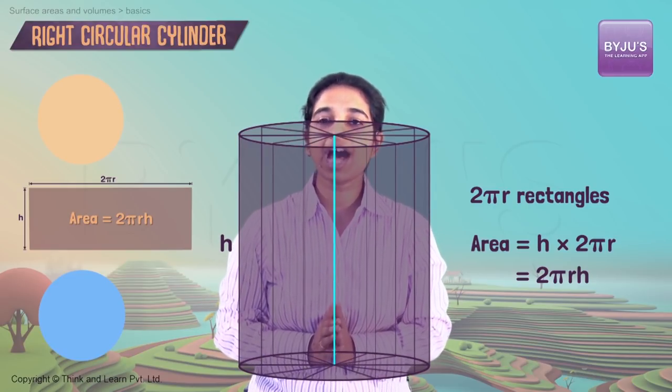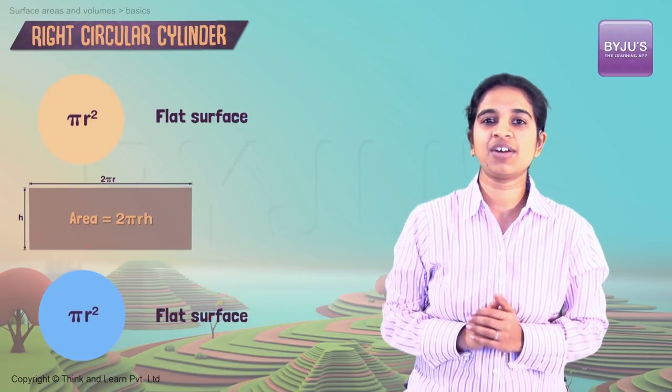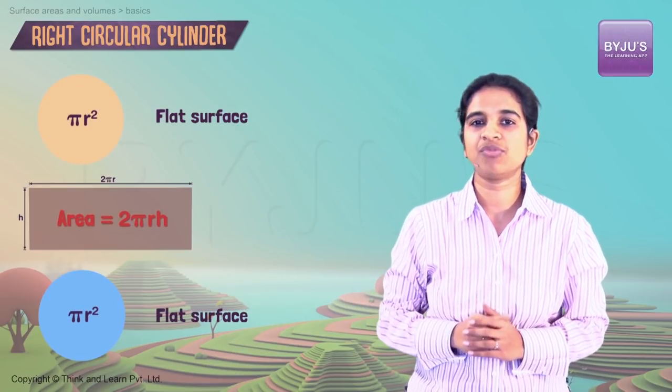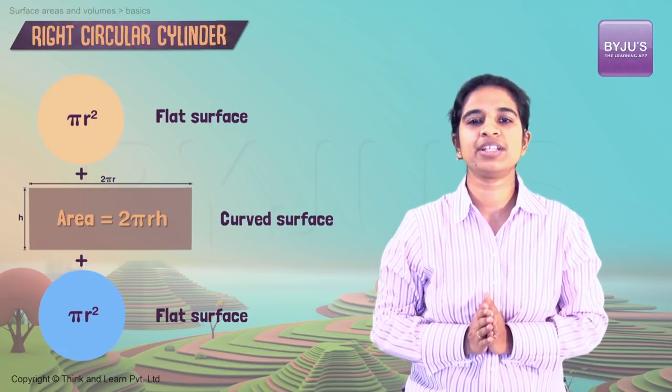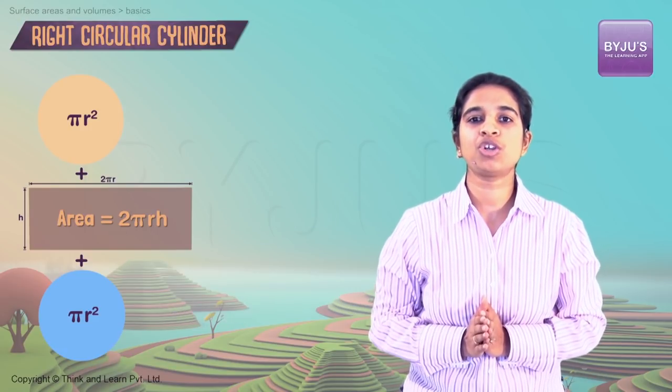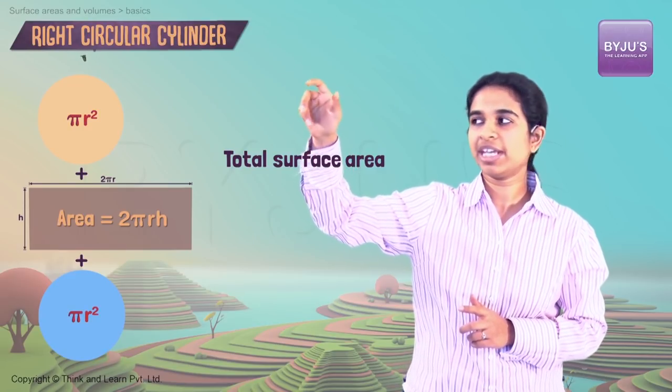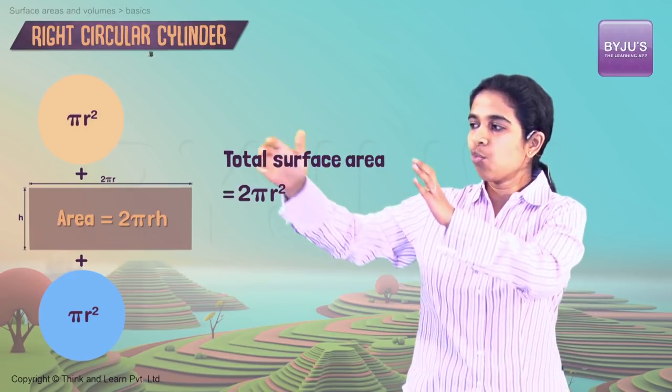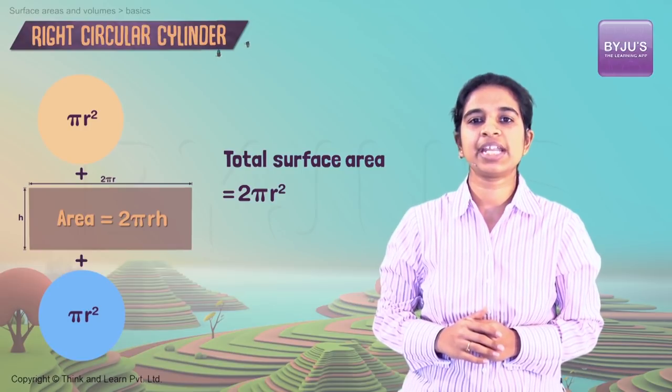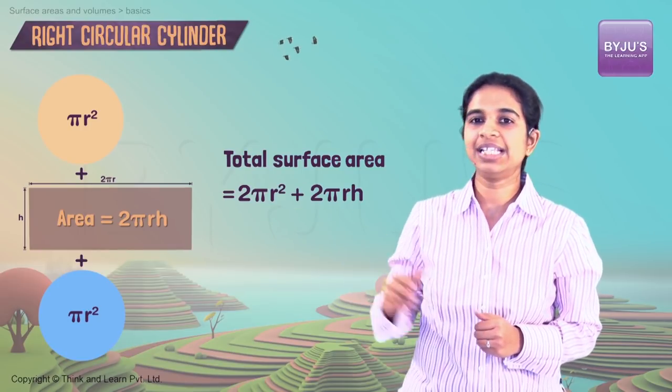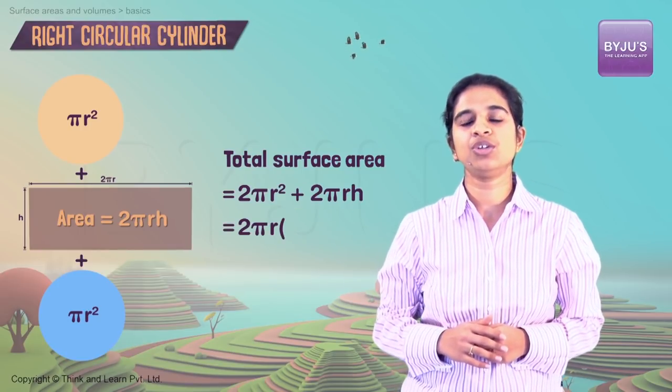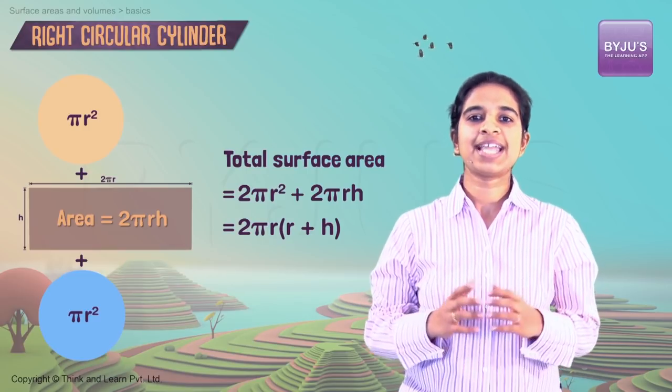So now we know the area of the flat surfaces, we also know the area of the curved surface. You add the two and you'll get the total surface area. So what will total surface area be? Two of these circles with area πr² each, that is 2πr², one curved surface with area 2πrh. Add these up, you'll get 2πr(r + h).